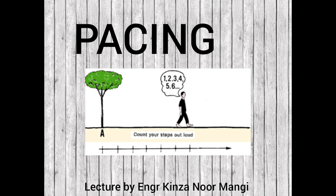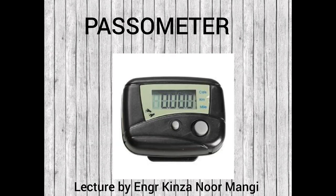Next is the passometer. It is a small instrument that looks like a stopwatch. The passometer is used for counting the number of steps automatically by a mechanical device. It offers an improvement over the normal pacing method when a very long distance is to be measured and when it becomes very tedious and extremely difficult to remember the number of steps. In the figure you can see how the passometer looks.